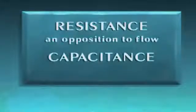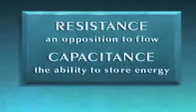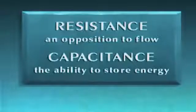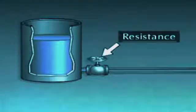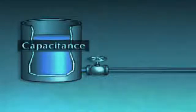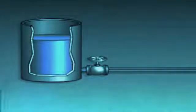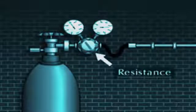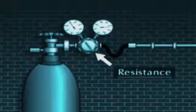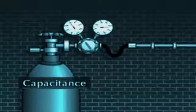All processes have characteristics that can affect how a control system responds to operating changes. Two of the more important characteristics are resistance and capacitance. Resistance can be thought of as an opposition to flow, while capacitance can be thought of as the ability to store energy. While these terms are commonly used in describing electrical circuits, they can also be applied to process systems containing fluids. In a liquid system, resistance is caused primarily by a valve opposing flow from a container, and capacitance is determined by the size of the container. In a gas system, resistance opposes gas flow from a pressurized cylinder, and capacitance depends on the storage capacity of the cylinder.